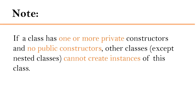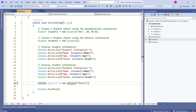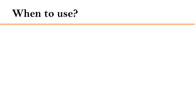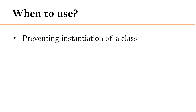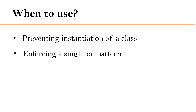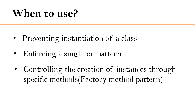A very important thing to understand is: if a class has one or more private constructors and no public constructors, other classes cannot create instances of that class. If we cannot create an instance of that class, what is the purpose of having a private constructor? Private constructors are often used for various purposes such as preventing instantiation of a class, enforcing a singleton pattern, and controlling the creation of instances through specific methods — which is the factory method pattern.